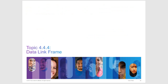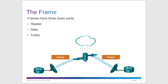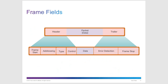The data link frame has three basic parts: the header, the data (which is essentially the packet), and the trailer. The header contains the frame start (a sequence of bits indicating frame start), frame addressing, type, and control fields. The trailer contains error detection and frame stop bits.